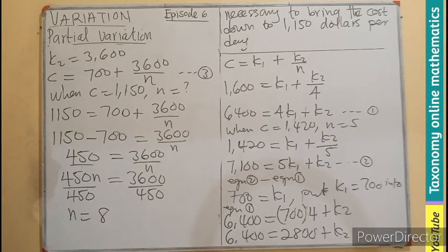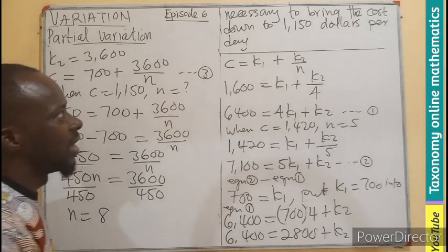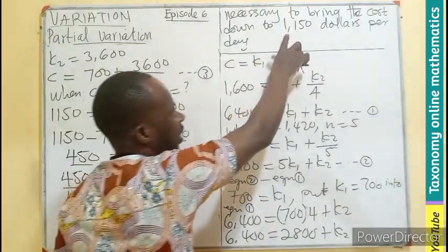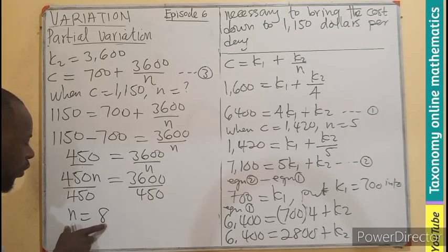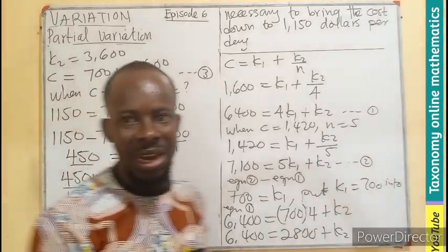Your N will be, when you cancel this, you get 8. So what it means is that the cost has been reduced to this will make the number of cars that will be produced to be 8. You can see the relation.